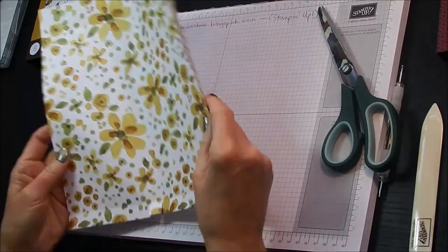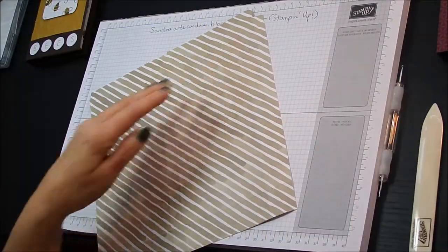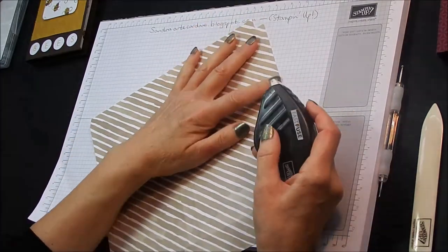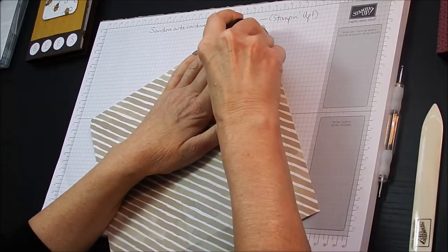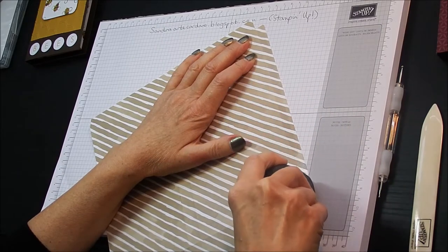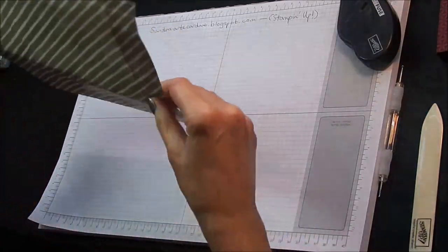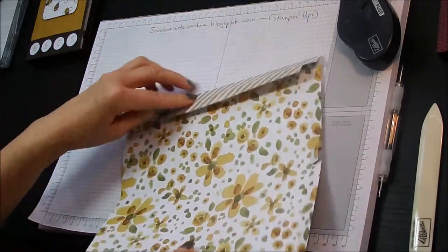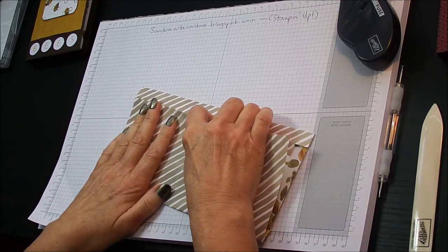And then we need to glue our bag down. So getting my fast fuse, but you can use sticky strip if you wish, but I find that for speed this is quicker. And we run a nice line all the way down the edge, and then I fold it over like that so that I can line it up nicely along there.